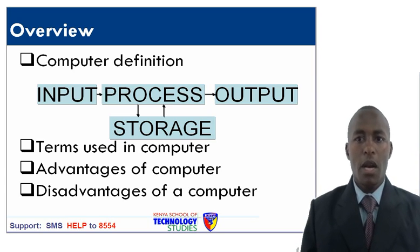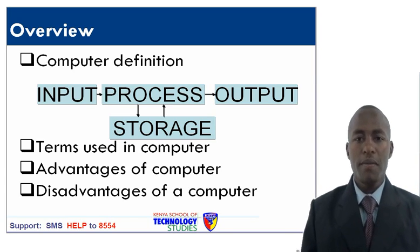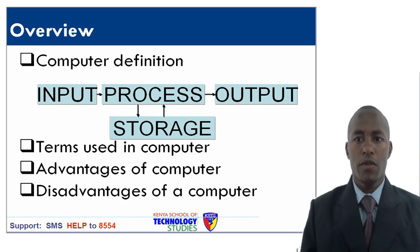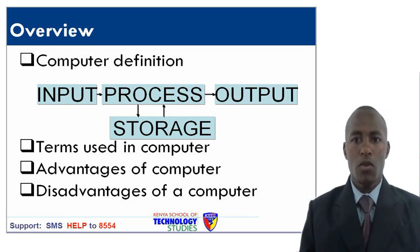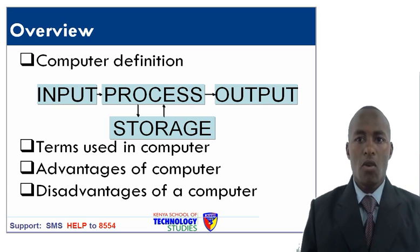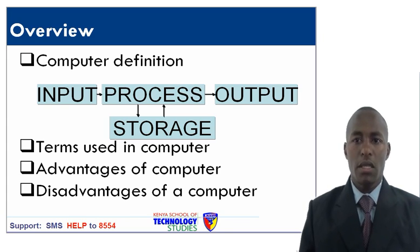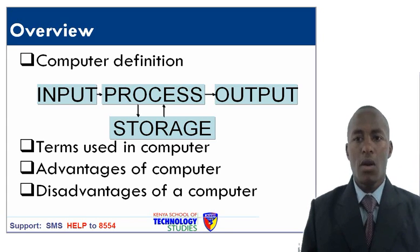Hard copy is a printed document. Hardware refers to the basic or tangible components of the computer. And the last term is software, which is a set of rules or instructions that govern how the computer operates.